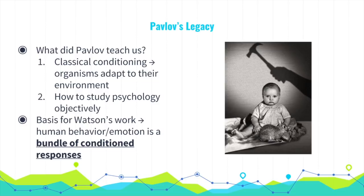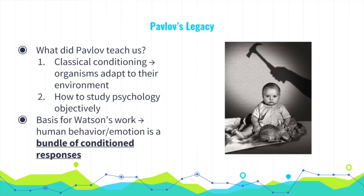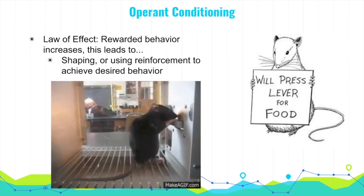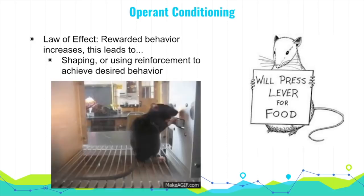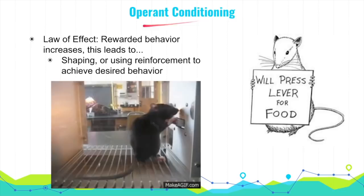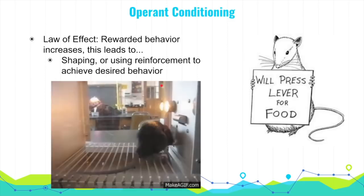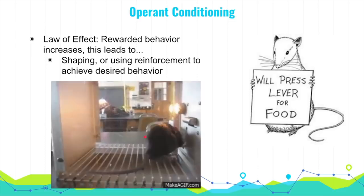Now we come to operant conditioning — the second type of learning. Classical conditioning relies on respondent behavior, where a response is triggered by a stimulus. Operant conditioning relies on operant behavior, where the subject's behavior precedes a change in environment. B.F. Skinner, the counterpart to Pavlov for operant conditioning, created the Skinner Box — an operant chamber in which a rat learned to press a lever to receive food.